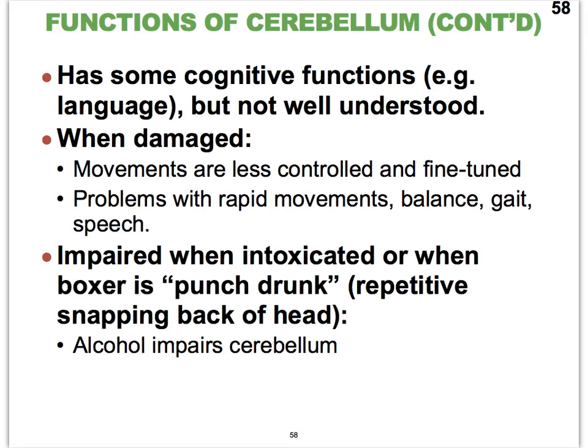So we're finally done discussing all parts of the brain: the cerebrum, the diencephalon, the brainstem, and the cerebellum. Next, we're going to take a quick look at the two functional brain systems — the limbic system, which we've been referring to as the emotional brain, and the reticular formation system located in the brainstem. After that, we'll wrap up the whole brain topic by learning about the various ways our brain is protected.